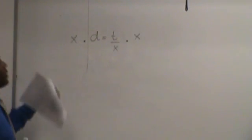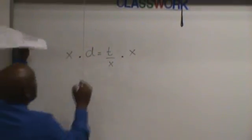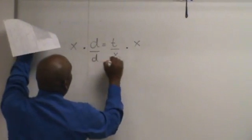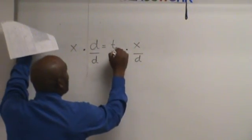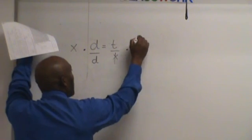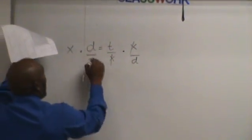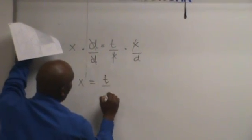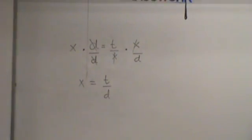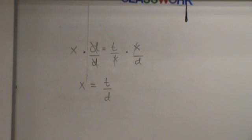And then what? So this one cancels that one. That cancels that. So we're left with x equals t over b. You're going to have to be able to do that.